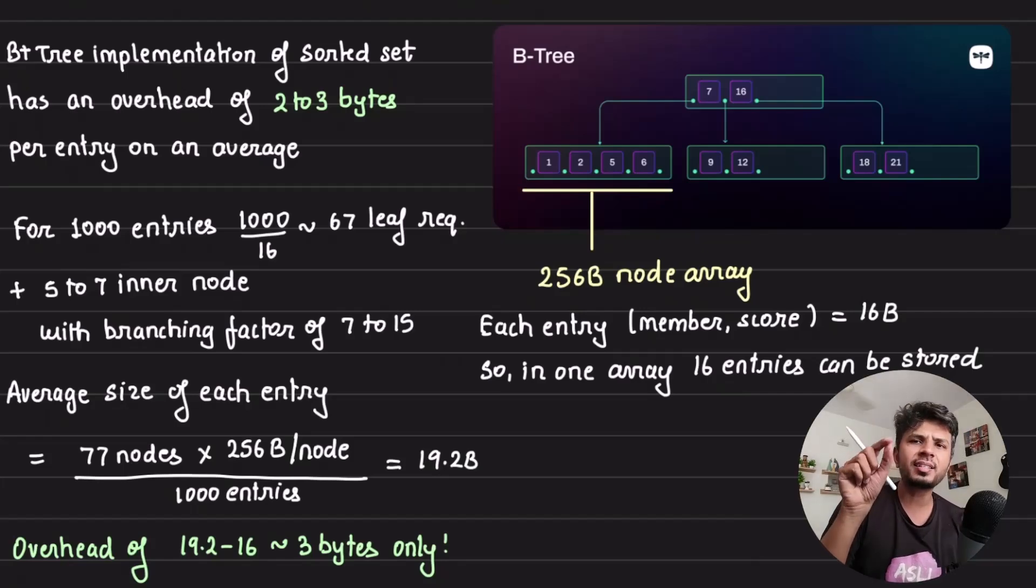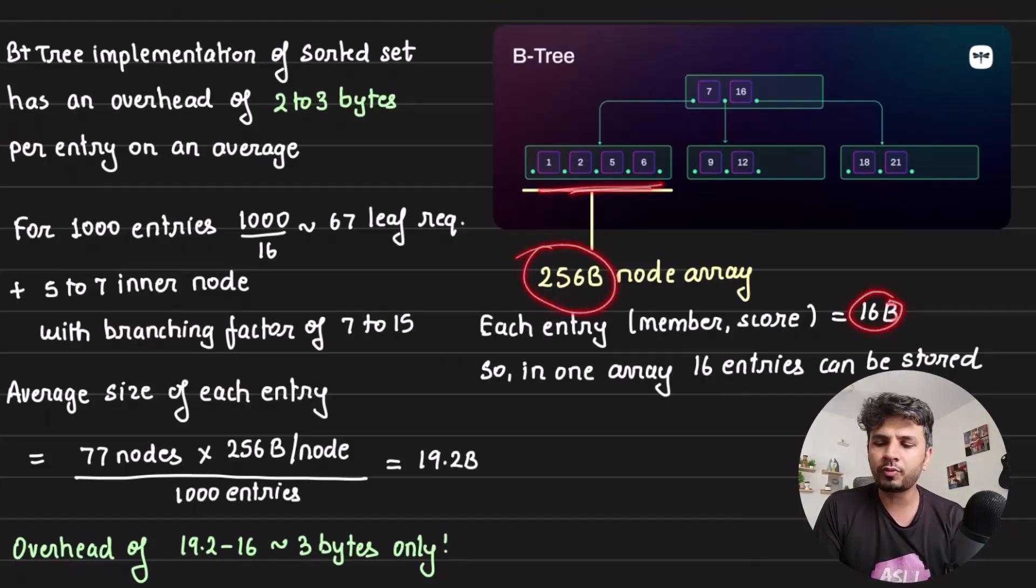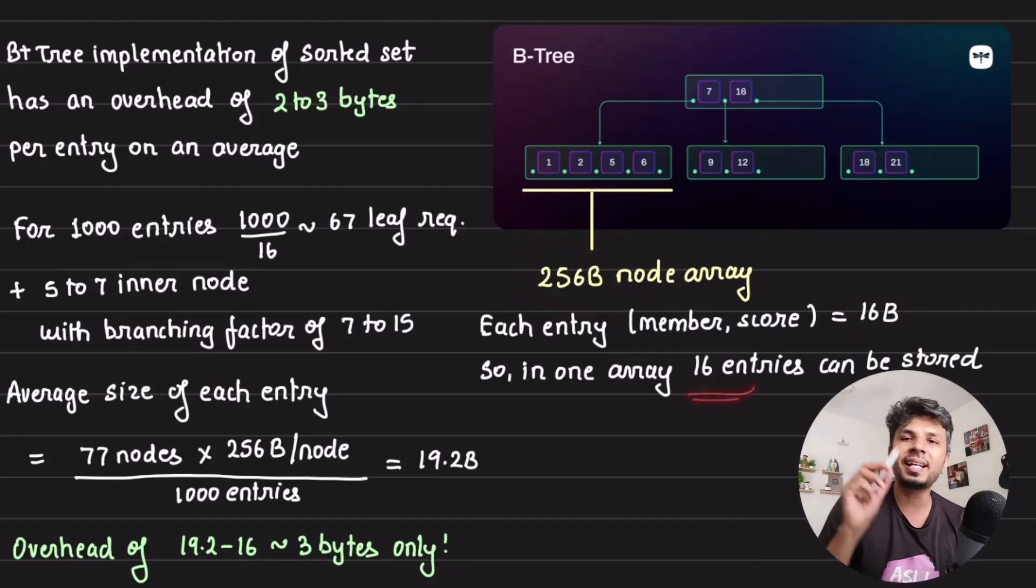If each node is 256 byte array, how many entries can be added? The entries are the member and score. Member is 8 bytes, score is 8 bytes, so each entry is 16 bytes. How many entries can fit in 256 bytes? There will be 16 entries that fit in 256 bytes. So in one leaf node, 16 entries can be fitted.